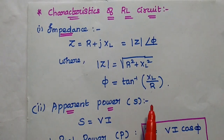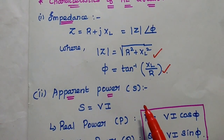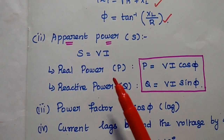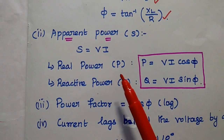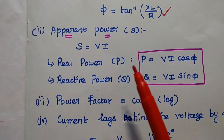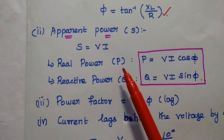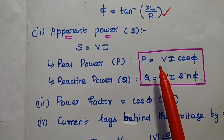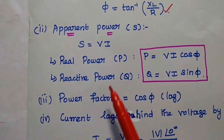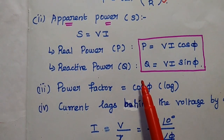The imaginary part is XL and the real part is R. These two values are important to draw the phasor diagram. The next characteristic is apparent power S equals V multiplied by I. The real power P due to the resistive element is V times I times cos φ. The reactive power Q due to the reactive element XL is V times I times sin φ.